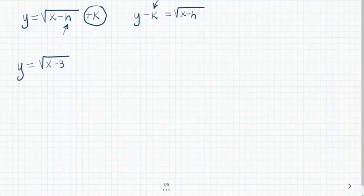For example, how do we graph this? Well, in this case, the vertex is going to be at the opposite of negative 3, and there's no k value, so that's just 0. So here's our vertex, and the shape is the same as a parent graph.